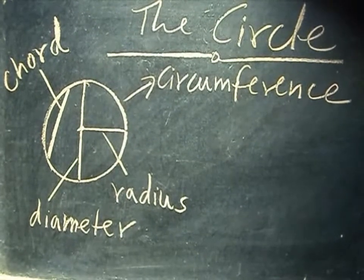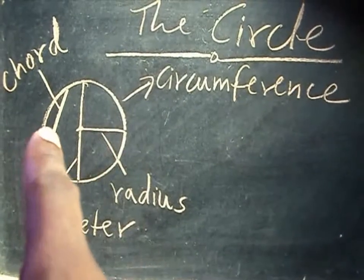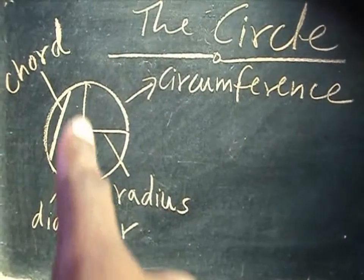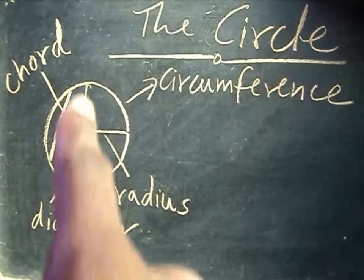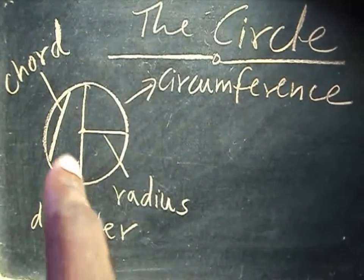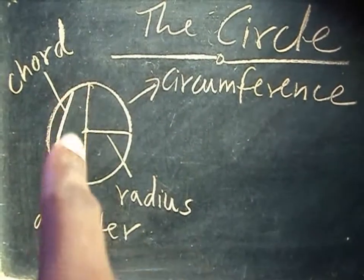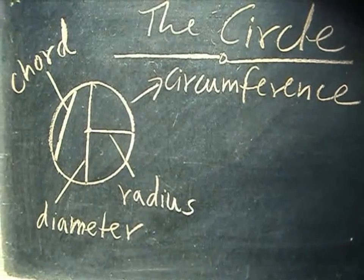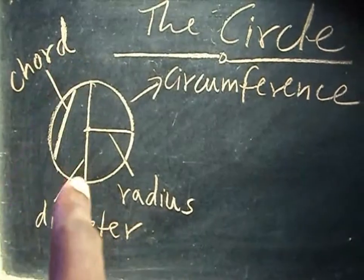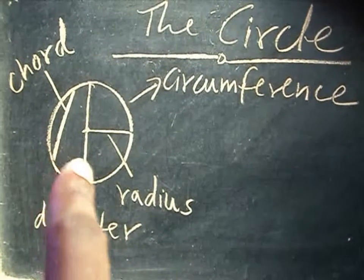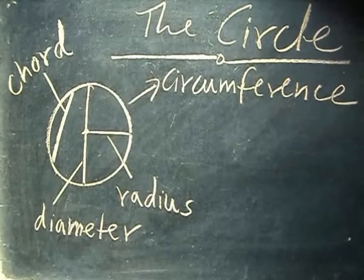The plural of radius is radii. Two of them will give you what is called the diameter. The diameter is a straight line running from end to end of the circle, and it passes through the center of the circle. So one radius plus one radius gives you the diameter.